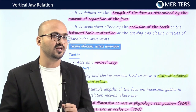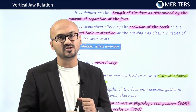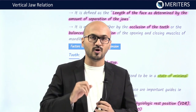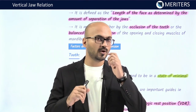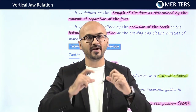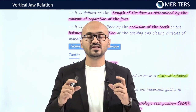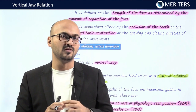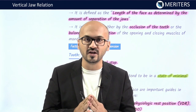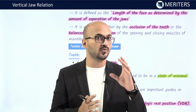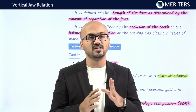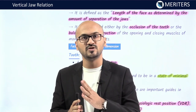To understand vertical jaw relation in a complete denture patient, let's do this small exercise. Try to close your mouth. When you close your mouth, your teeth help you stop at a specific place. This is your vertical dimension at occlusion — that is the dimension at which your teeth are occluding. That is the vertical dimension, the separation of the jaw when you are occluding.